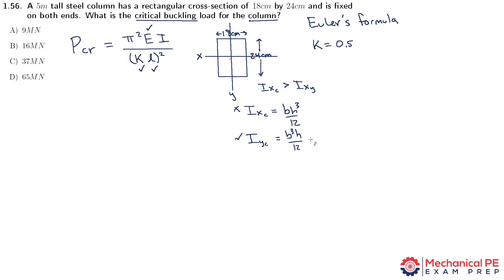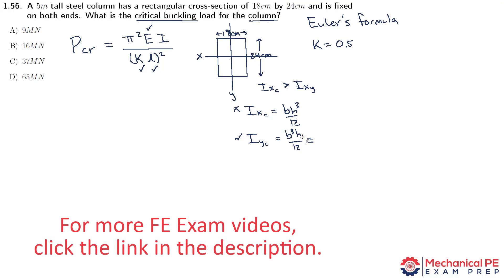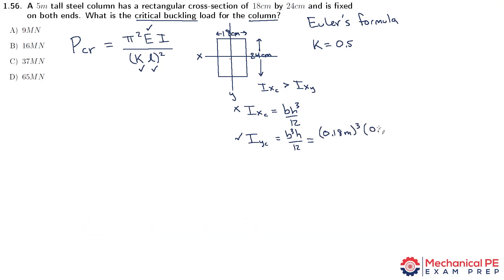So with that in mind, let's go ahead and make our substitutions. I am going to put these in meters. So the base instead of 18, I'll put it as 0.18 meters. And that quantity is cubed. And then for the height, it's 0.24 meters. All divided by 12 gives us a moment of inertia in the y direction of 1.166 times 10 to the negative 4th meters to the 4th.